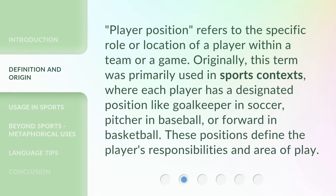Player position refers to the specific role or location of a player within a team or a game. Originally, this term was primarily used in sports contexts, where each player has a designated position like goalkeeper in soccer, pitcher in baseball, or forward in basketball. These positions define the player's responsibilities and area of play.